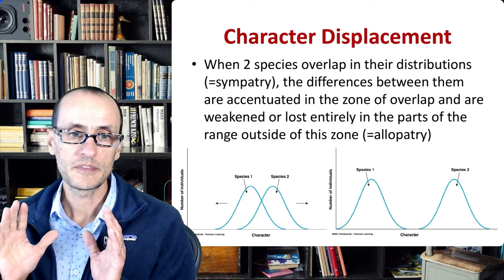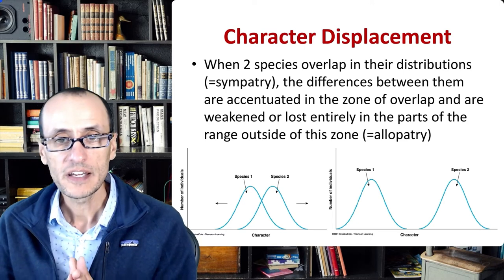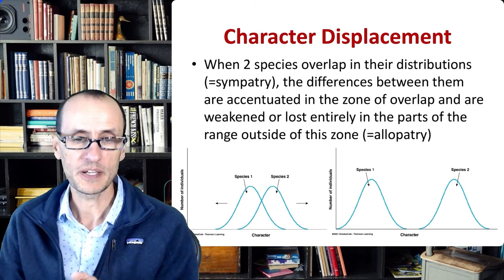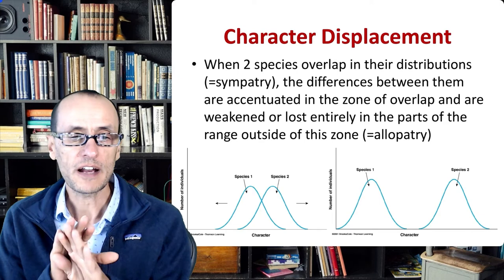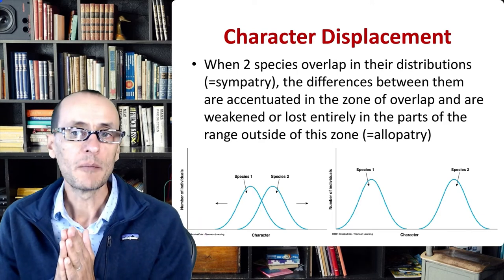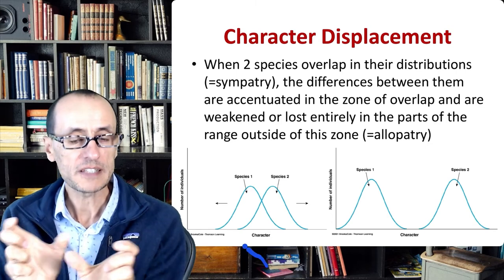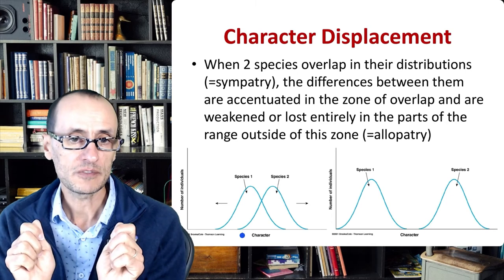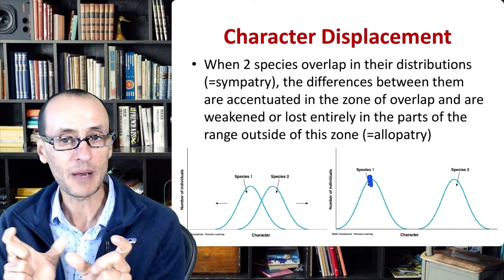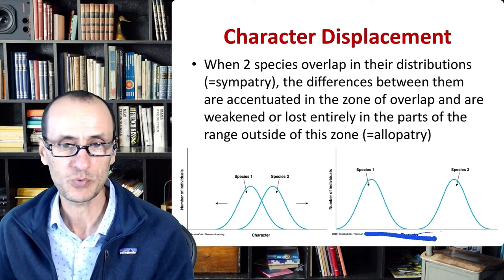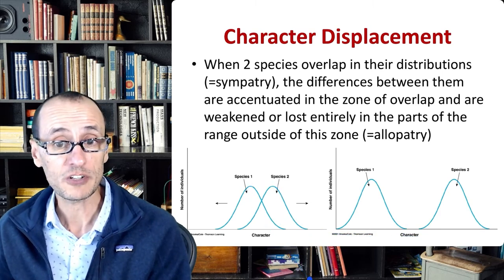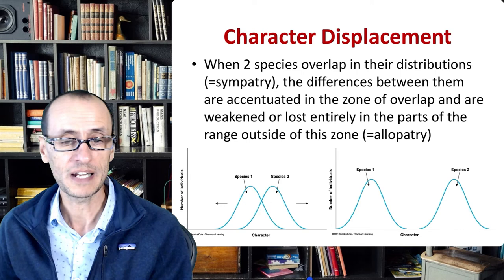Another example pointing to past competition is character displacement. When two species occupy the same geographic area, you would expect that in areas where they overlap the most, physical or biochemical attributes would be slightly different in ways that affect how they utilize resources — minimizing the negative interactions they would otherwise experience. You would expect the peak characteristics to be further apart in places of sympatry, where they co-occur, than when they occur on their own.